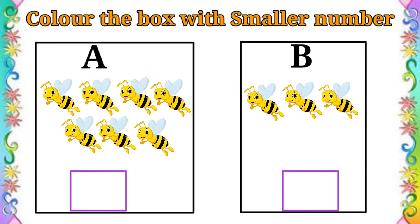Next, we can see 2 sets of honey bees. A set has 7 honey bees. B set has 3 honey bees.